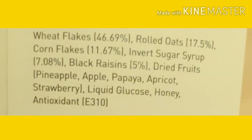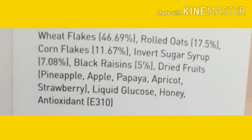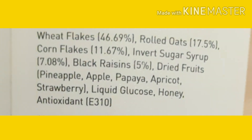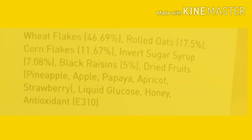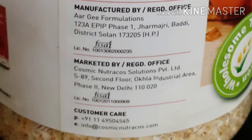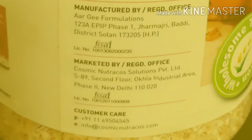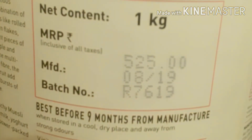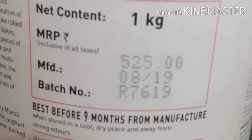You can also see what food additives are added in this particular product, the address of the manufacturing company, net quantity, code number, batch number, and lot number. Not only this, it also contains the expiry date, best before date, and date of manufacturing.